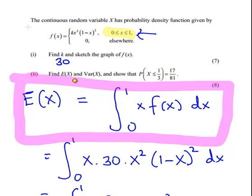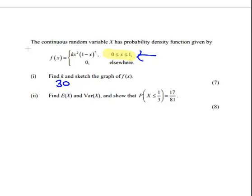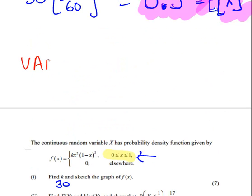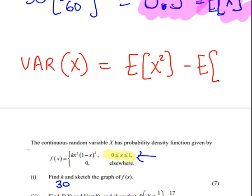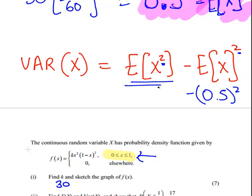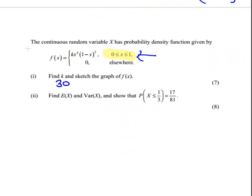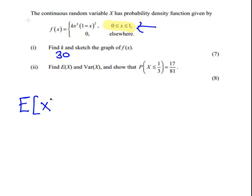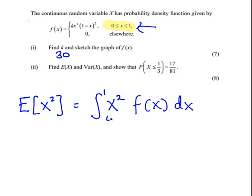Now we're going to find the variance of x, and we're going to use this property here: the variance of x is the expected value of x² minus the expected value of x to be squared. Just important that the squaring are in different places. This is minus 0.5 squared, minus 0.25. What we have to do is calculate this here.